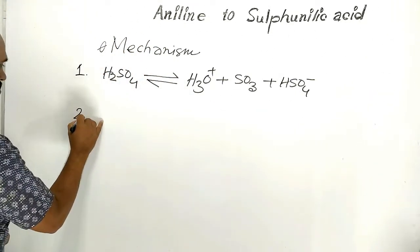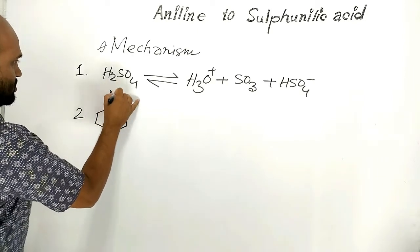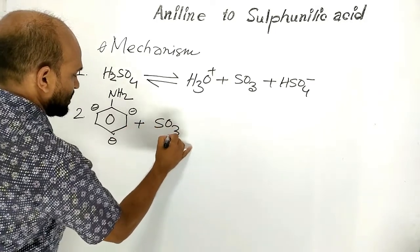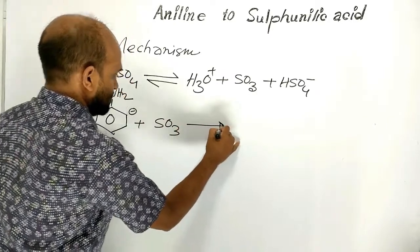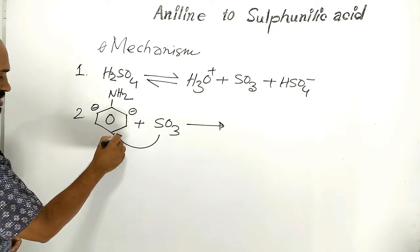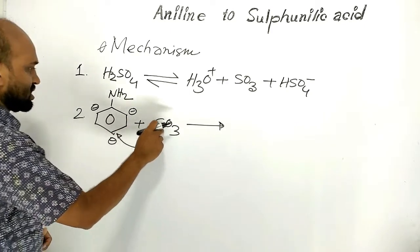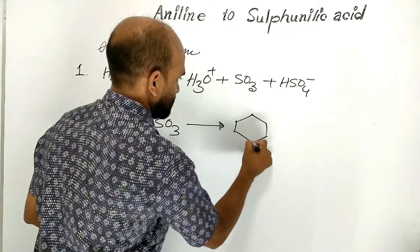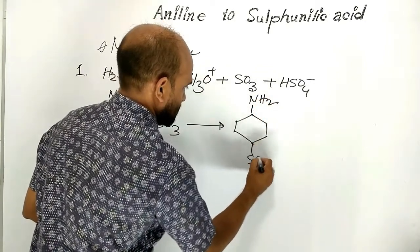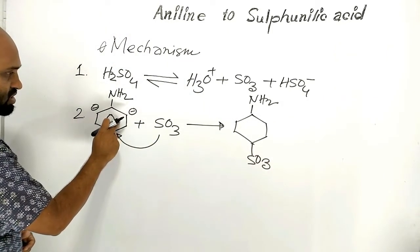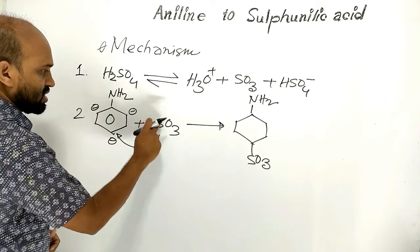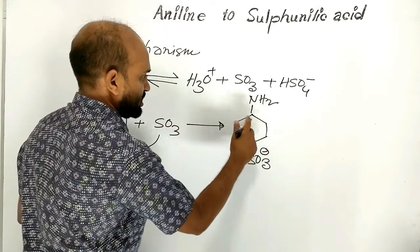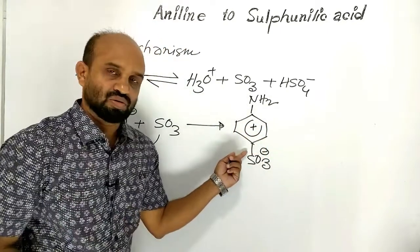Step 2: In aniline, the amino group is an ortho-para directing group, and the electrophile is sulfur trioxide. Sulfur trioxide attacks the para position easily, but cannot attack the ortho position because of steric hindrance. In this step, aniline acts as the electron donor and sulfur trioxide acts as the electron acceptor. After accepting electrons, sulfur trioxide becomes negatively charged, while the benzene ring becomes positively charged, forming a sigma complex.